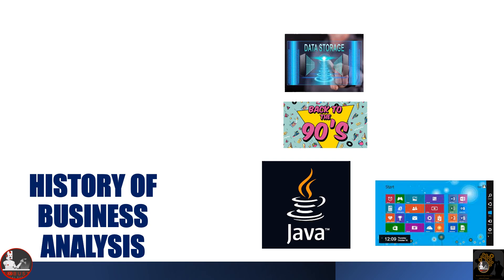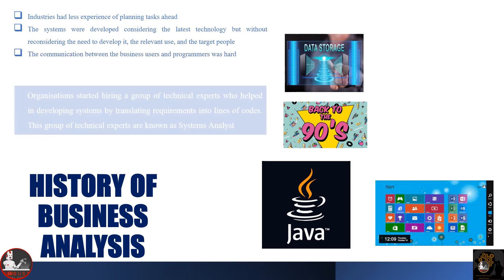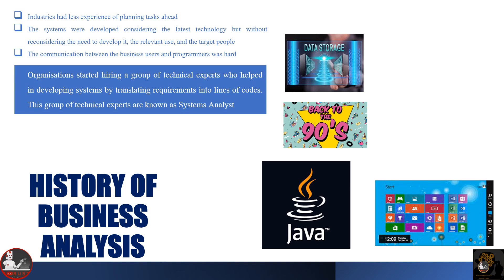Although the value of technology was apparent, a vast sum of money was being spent. But why? Industries had less experience of planning tasks ahead. The systems were developed considering the latest technology but without reconsidering the need to develop it, the relevant use, and the target people. The communication between the business users and programmers was hard. Organizations started hiring a group of technical experts who helped in developing systems by translating requirements into lines of code. This group of technical experts are known as systems analysts.